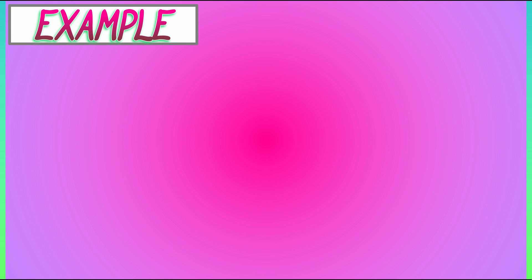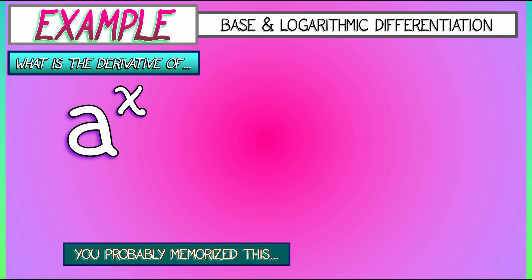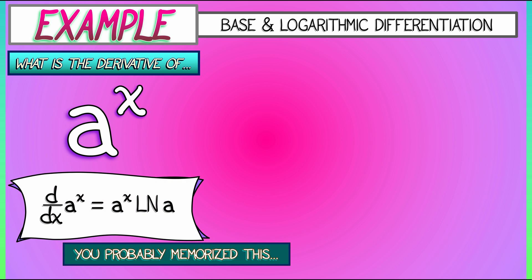Here's a different example that is similar, but a little bit simpler. What's the derivative of a to the x, where a is a constant? Now, this is something that you've probably seen before. You may have memorized this. You may know that the derivative of a to the x is a to the x times log of a, which makes sense if you think of it. What happens when a equals e? Uh-huh, that works out. Okay. Now, why is this true?